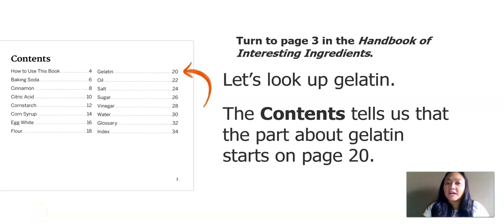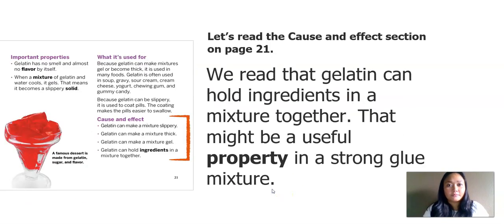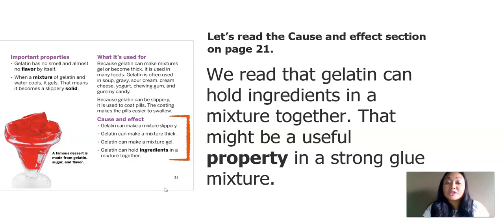We are given the table of contents of the Handbook of Interesting Ingredients. In the table of contents, we can find the different ingredients that we can read about in the book in alphabetical order. Remember, we're reading first about gelatin. And as you can see with the arrow, gelatin starts on page 20. Here's the page of gelatin — but for the sake of this lesson, we're going to use page 21, the next page, and we're going to specifically look at the cause and effect section.